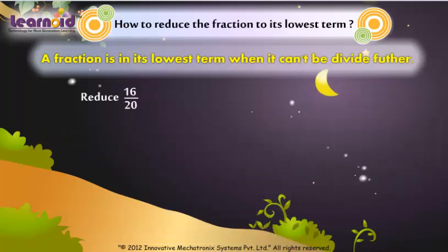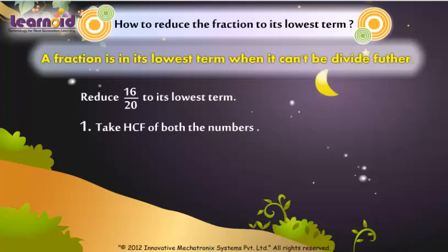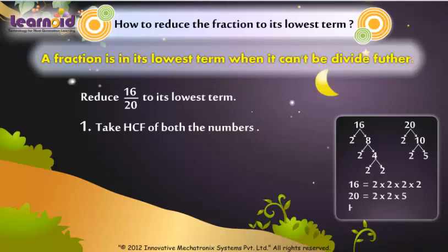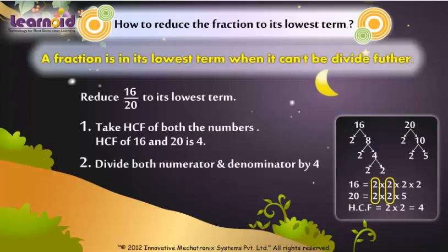Reduce 16 by 20 to its lowest term. Take the HCF of both numbers. The HCF of 16 and 20 is 4. Divide both numerator and denominator by 4.